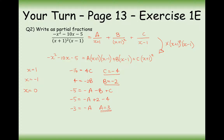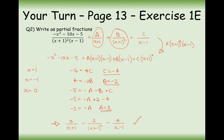Now all that's left is to write out the final answer with A, B, and C substituted in: 3/(x+1) minus 2/(x+1)² minus 4/(x-1). So have some practice on exercise 1e. The key point for this video: when you've got a repeated factor — x plus 1 squared on the denominator — you must create two terms: one with x plus 1 on the bottom, and one with x plus 1 squared on the bottom. Thanks very much for watching.